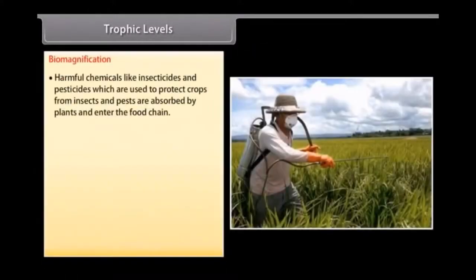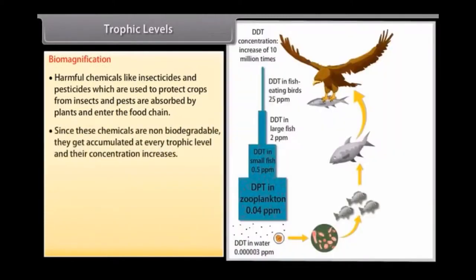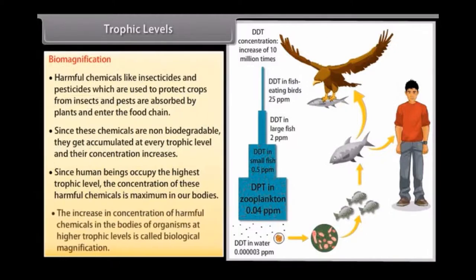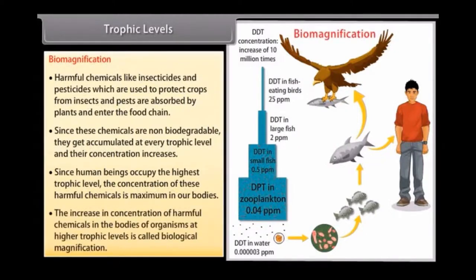Biomagnification. Harmful chemicals like insecticides and pesticides, which are used to protect crops from insects and pests, are absorbed by plants and enter the food chain. Since these chemicals are non-biodegradable, they get accumulated at every trophic level and their concentration increases. Since human beings occupy the highest trophic level, the concentration of these harmful chemicals is maximum in our bodies. The increase in concentration of harmful chemicals in the bodies of organisms at higher trophic levels is called biological magnification.